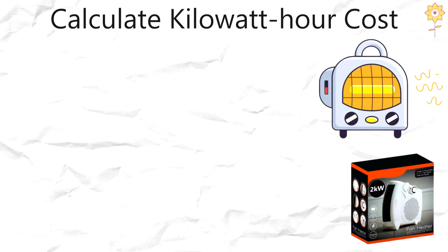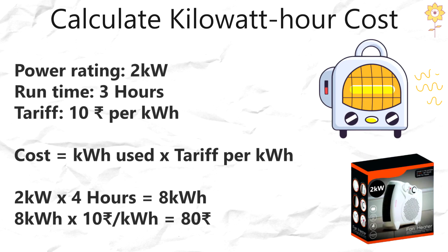To get the price, simply multiply the number of kilowatt hours used by the per kilowatt hour tariff from your electricity provider. For the heater running at 2 kilowatts for 4 hours, we get 8 kilowatt hours. If our provider charges 10 rupees per kilowatt hour, then 8 kilowatt hours times 10 rupees equals a cost of 80 rupees.